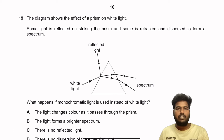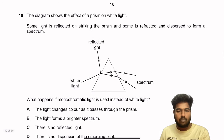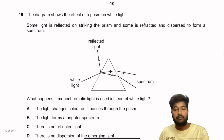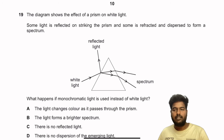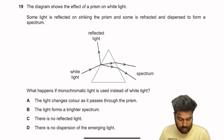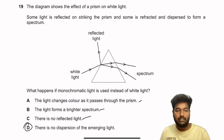Question 19: A prism disperses white light into a spectrum. What happens if monochromatic light is used instead of white light? Dispersion occurs because of differences in wavelength. With monochromatic light, there is only one wavelength, so there is no dispersion of the emerging light. Other effects like reflection still occur, but dispersion will not.